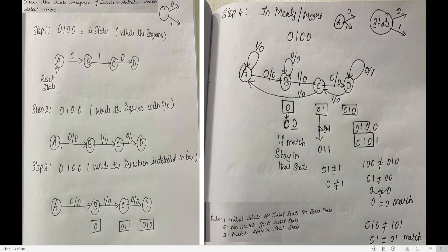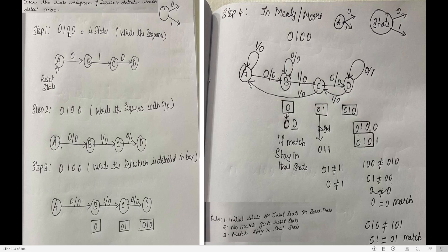Step one: write the sequence and assign states. Since there are four bits, I need four states: A, B, C, D. From state A, I move to state B when the input is 0. From state B, I move to state C when the input is 1. From state C, I move to state D when the input is 0. This gives the forward path through the sequence 0100.